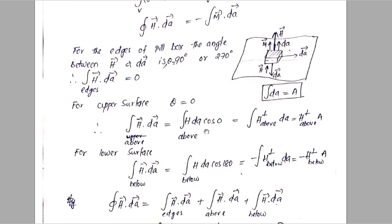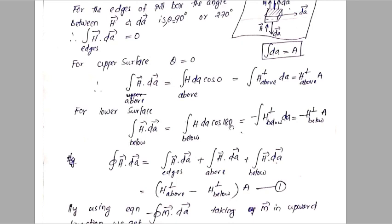For the upper surface, the angle between H and dA is zero, so H dot dA becomes H dA cos(0) and cos(0) is one. Since H is constant over the surface, this gives H perpendicular above times the area. For the lower surface, the angle is 180 degrees, giving minus H perpendicular below times the area.